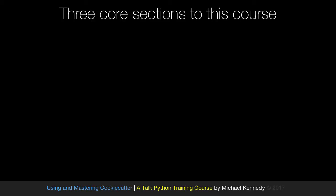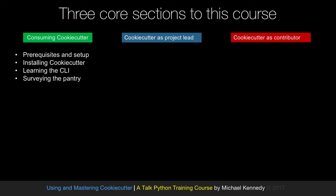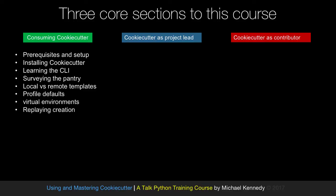To talk about what we're going to learn in this course, think of it in three sections. The first is consumers of CookieCutter — we'll cover prerequisites and setup, installing CookieCutter, learning the command line interface, surveying the existing pantry full of CookieCutters (that's the documentation section listing all existing templates), local versus remote templates, profile defaults, virtual environments, and replaying project creation for continuous integration.